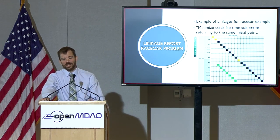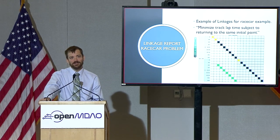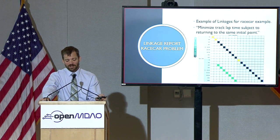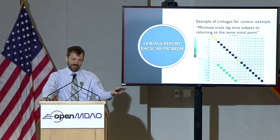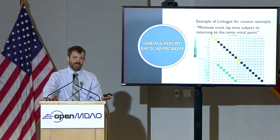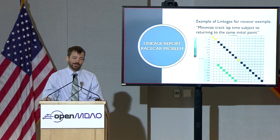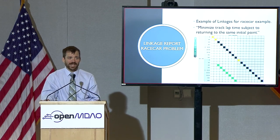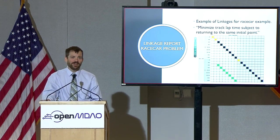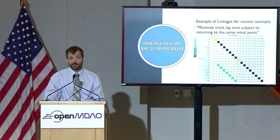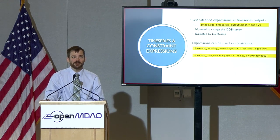The linkage report will highlight things in red if you've tried to link things that are over-constrained. Say at the end of one phase I have one quantity that's fixed, and at the beginning of the next phase that quantity is also fixed — if I tell them to be continuous, I'm over-constrained. That's a situation that many people accidentally find themselves in, but the report helps you recognize that pretty quickly.